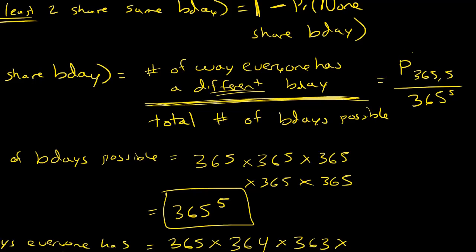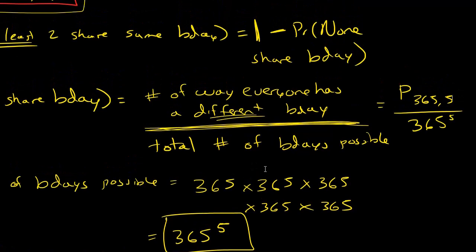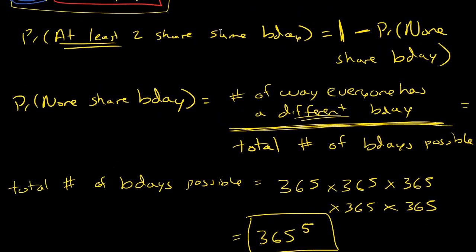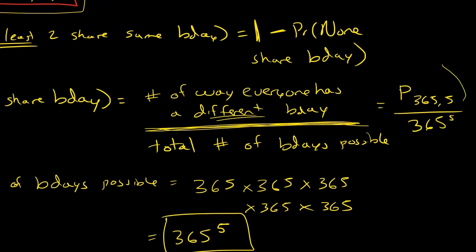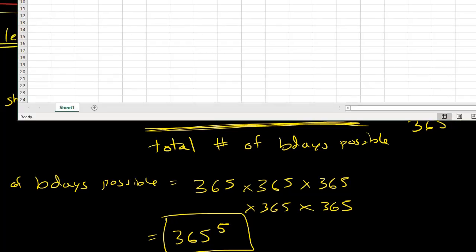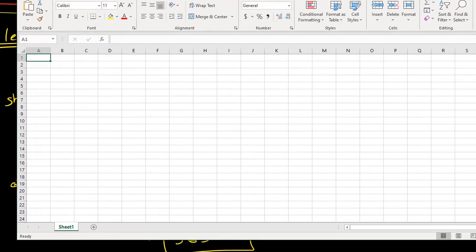So if you want to find out the probability that at least two share the same birthday, you can plug this in. Moving backwards at this point, I would have this equals one minus P(365,5) divided by 365 to the fifth power. How could I calculate this? I would need to use my computer or a calculator of some sort. Excel has a really great calculator built in and a lot of people have access to Excel.